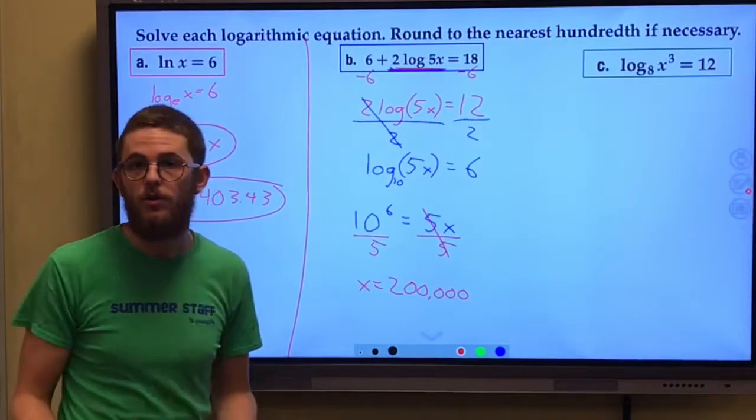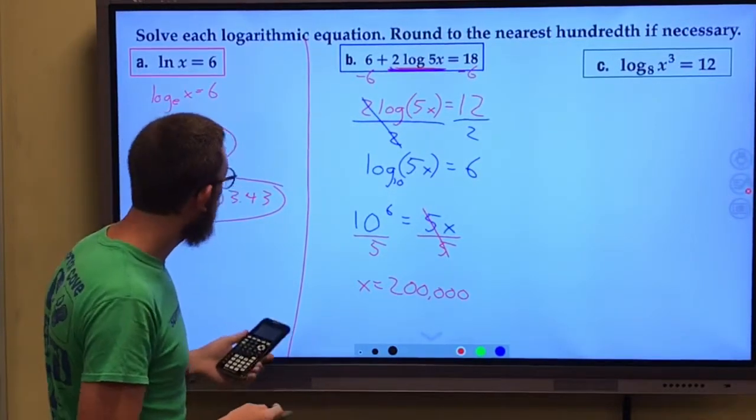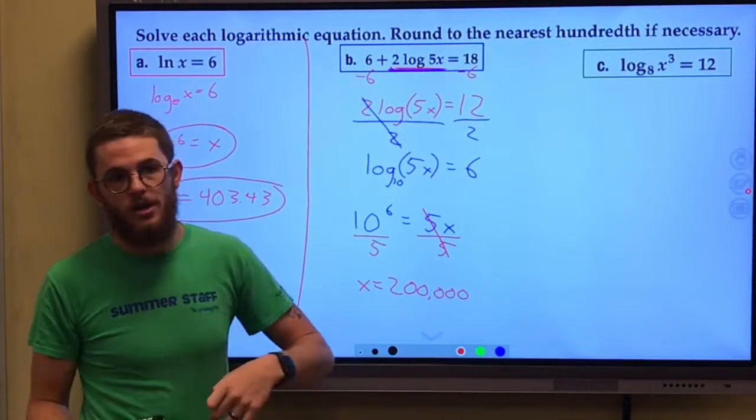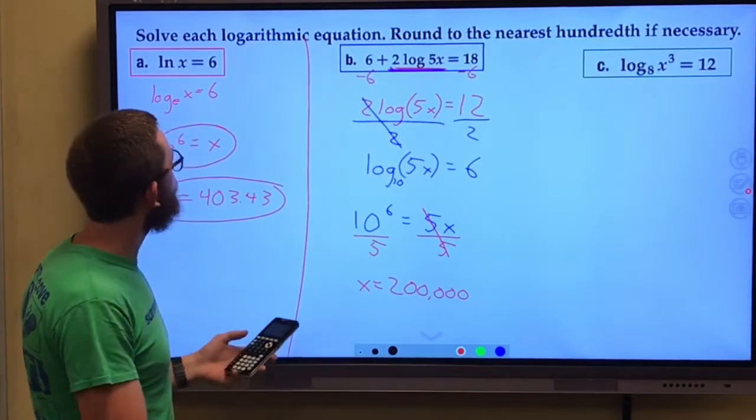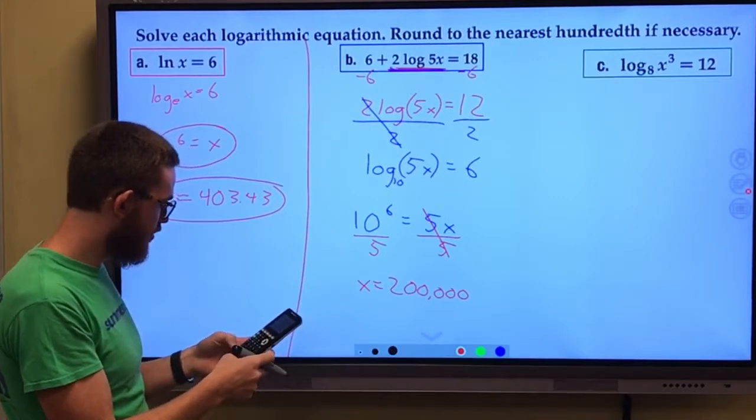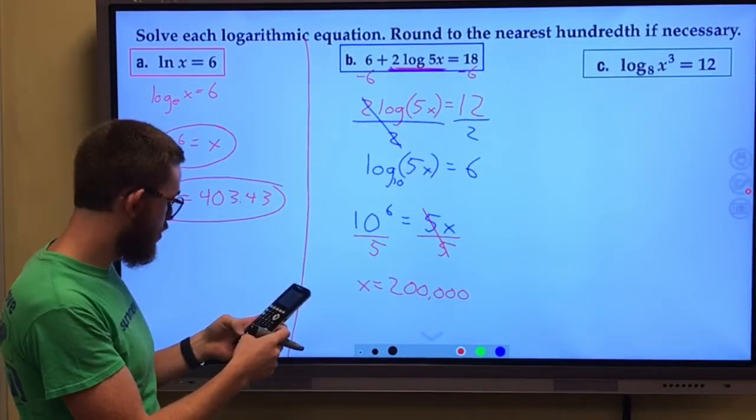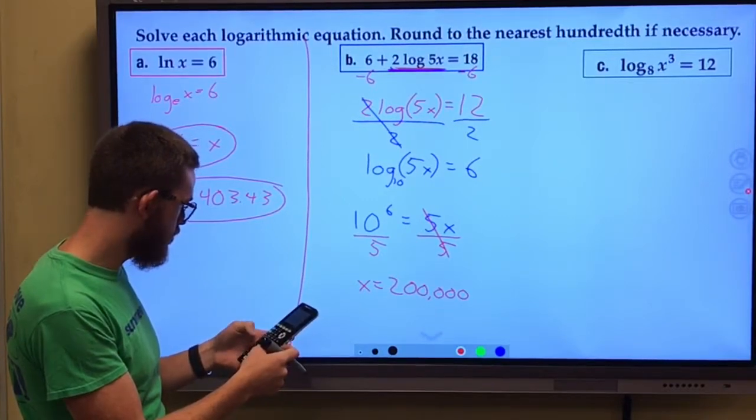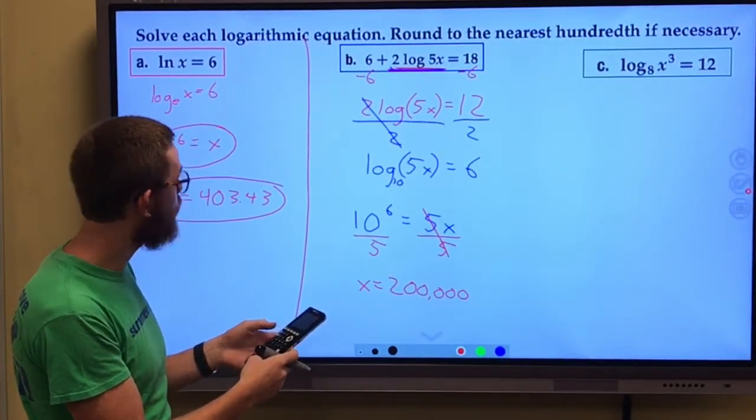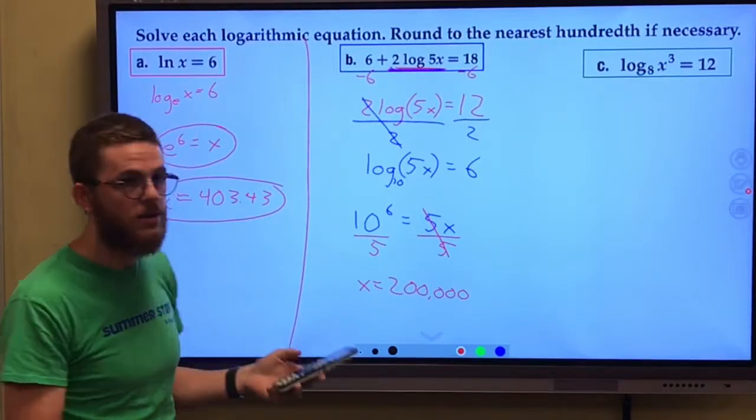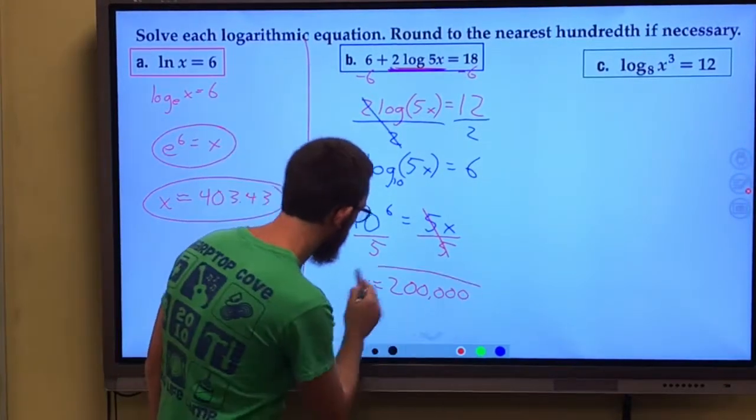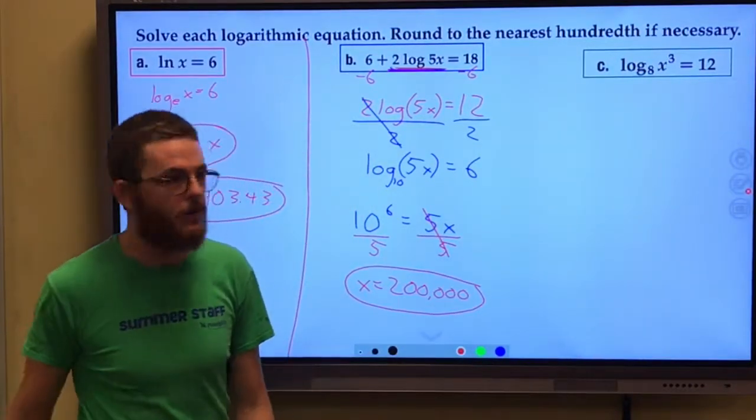You can always check yourself. You can always plug it back into the original. And that is a good idea with logarithms because remember, we can't take the log of a negative. If we do check this, 6 + 2 log my answer times five, and it does give me 18. So I can always double check myself and I feel extra confident now.